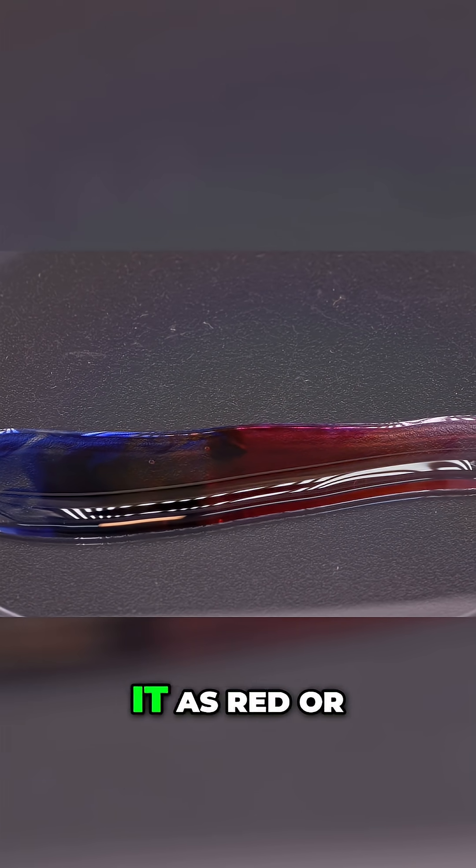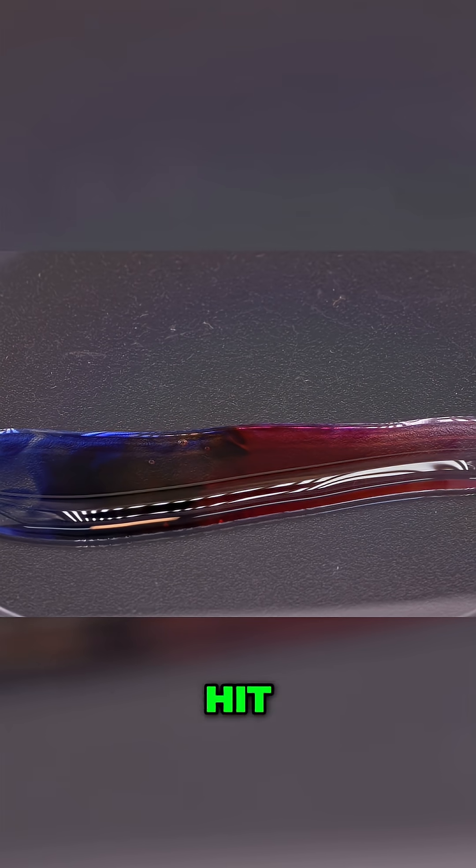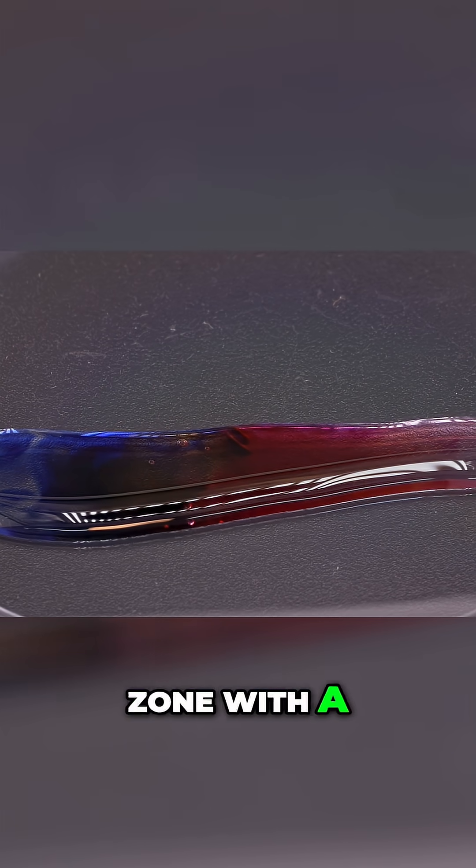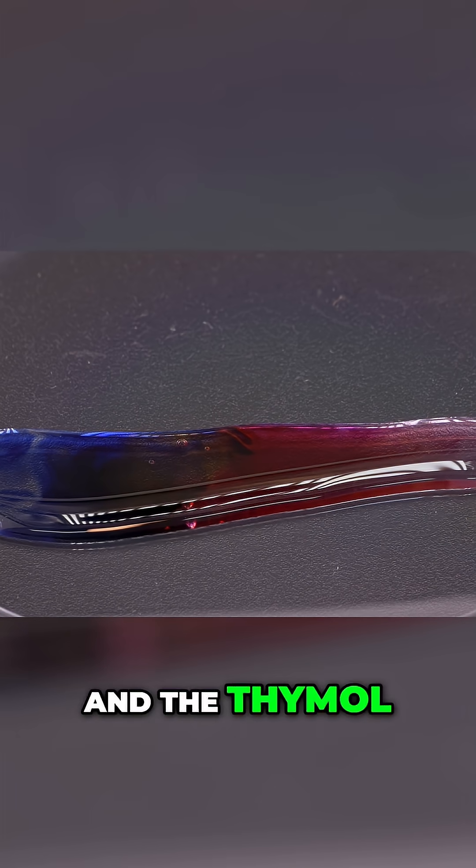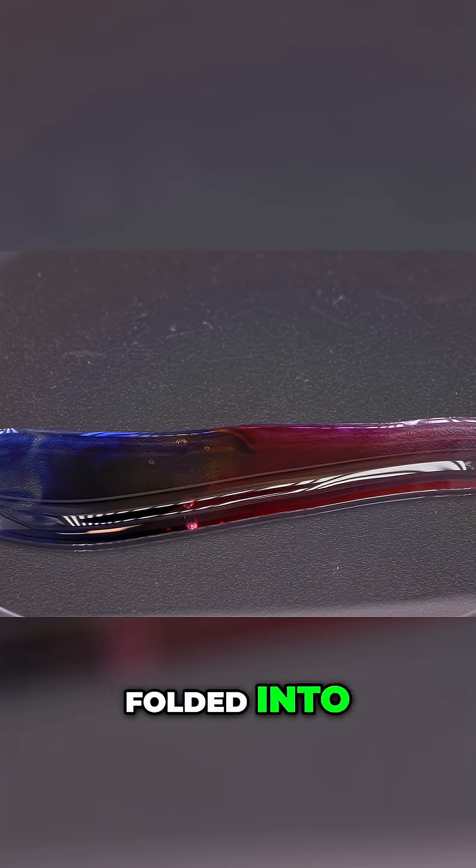And our eyes see it as red or yellow. So when the first drop of acid hit, it created a tiny zone with a very low pH. And the thymol blue there instantly folded into its red shape.